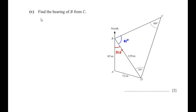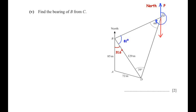Find the bearing of B from C. We draw a north direction at point C, calling it point P. The bearing of B from C is the clockwise angle from north at C to the line CB. We break this angle in parts, first drawing the south line from C making a straight line, giving 180 degrees for that portion.